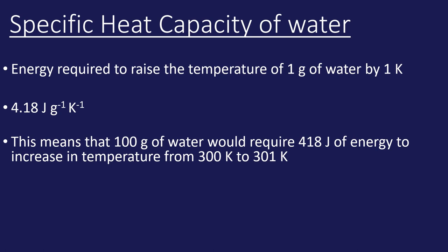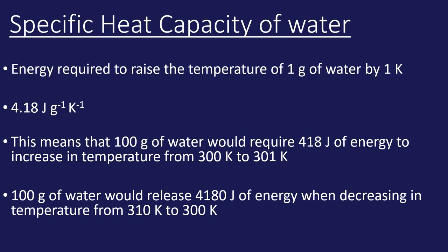If we had 100 grams of water, it would require 100 times that energy to raise the temperature by one kelvin — so to go from 300 to 301 K for 100 grams of water, it would be 418 joules. If the temperature cooled from 310 to 300 K, water would be releasing 4180 joules, because we're dropping 100 grams by 10 kelvins.